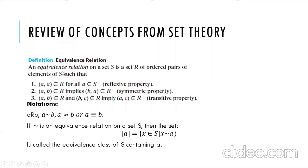As we recall from the course of set theory, a binary relation is called an equivalence relation if it satisfies three properties. An equivalence relation on a set S is a set R of ordered pairs of elements of S such that it satisfies the reflexive property — that is, for every element a of S, the ordered pair (a, a) is in R. Secondly, it satisfies the symmetric property, meaning if (a, b) is in R then (b, a) is also in R.